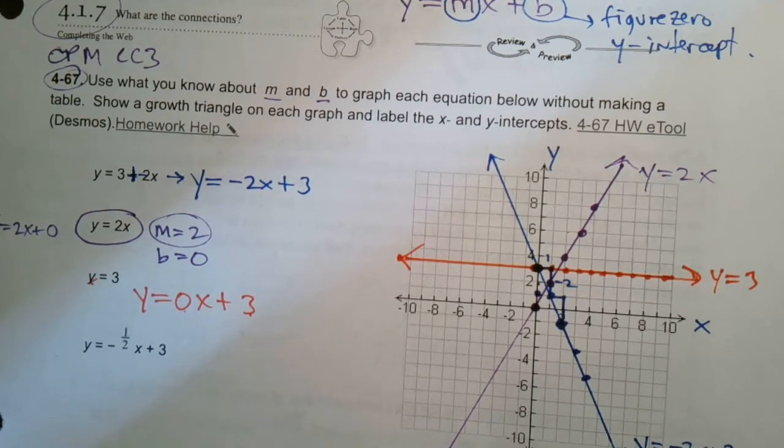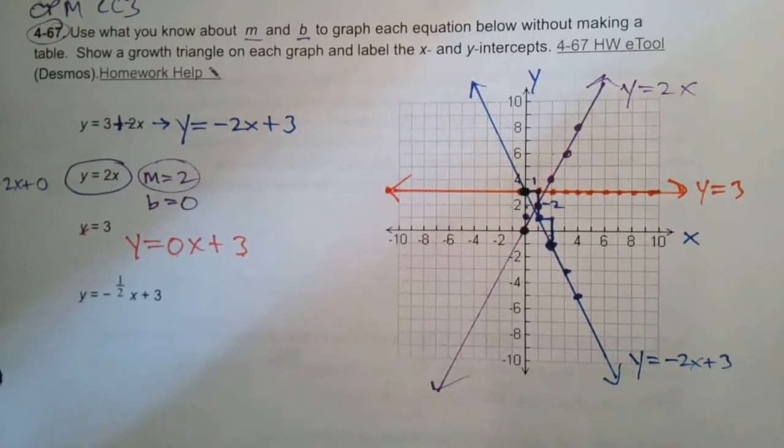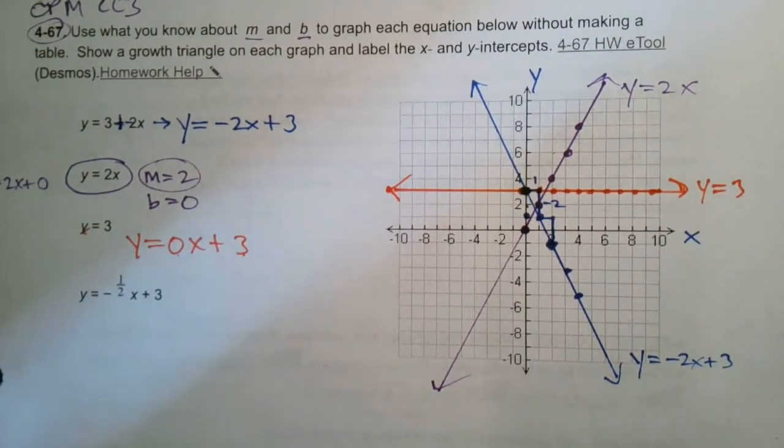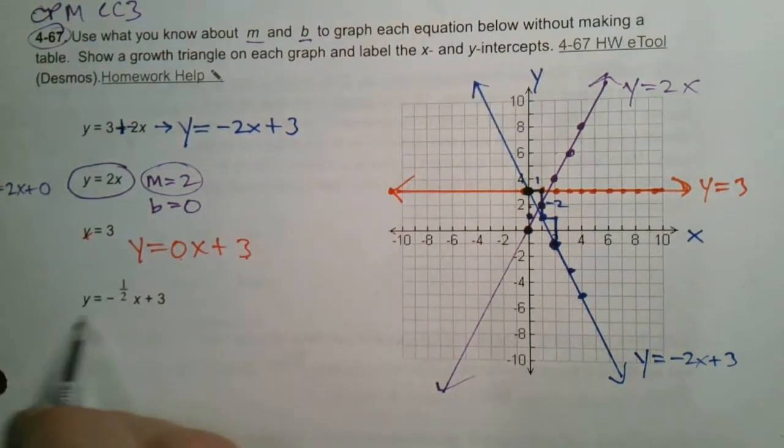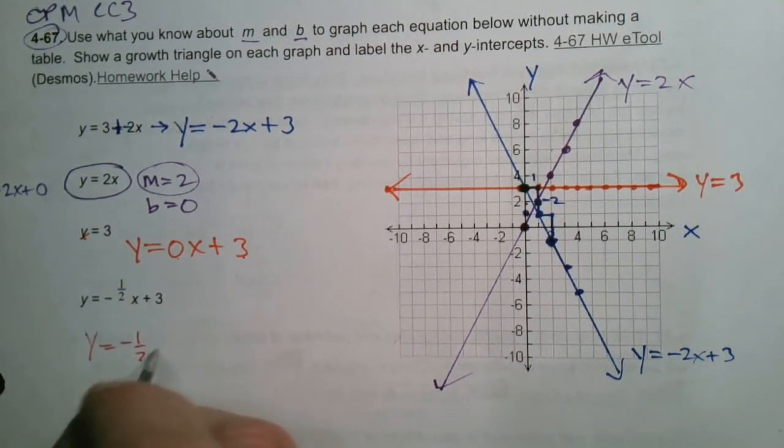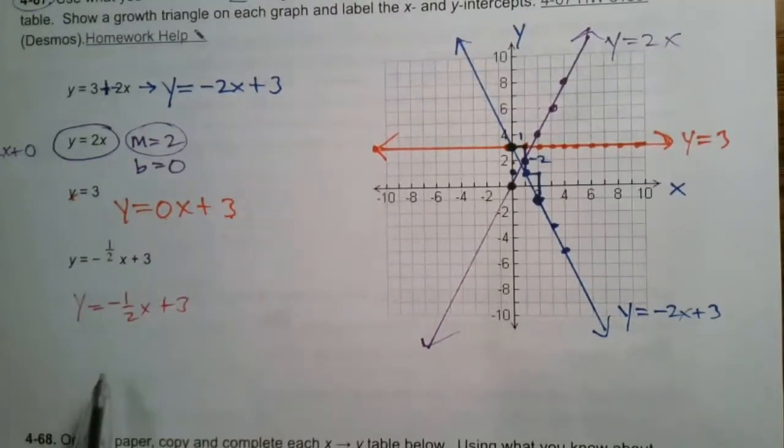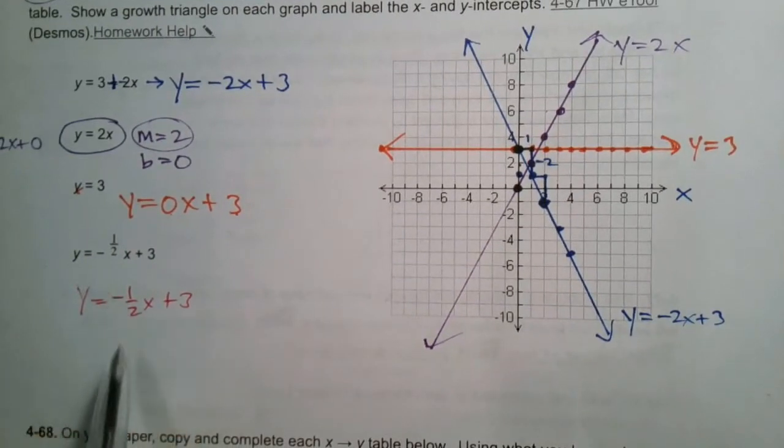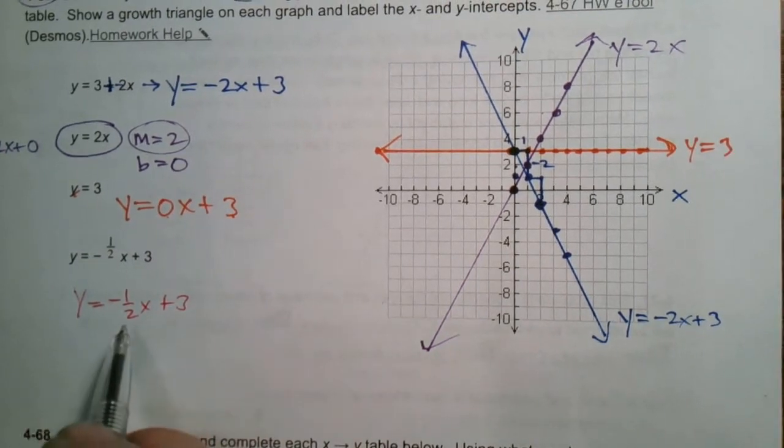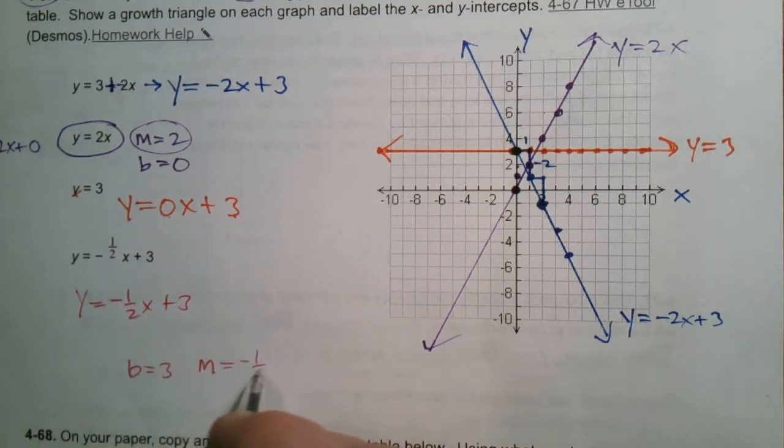Making sense so far? Last one, last one's tricky. I'm going to make that one red here so I have another color. Now with this one, that says y equals negative one-half x plus 3. The font got pushed a little bit on that one, so negative one-half.